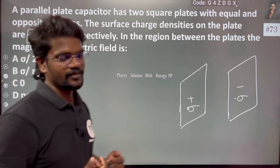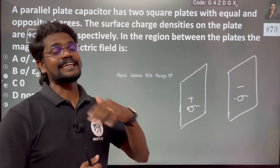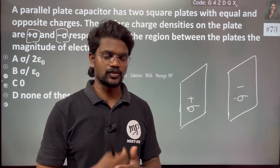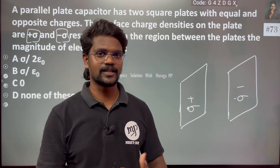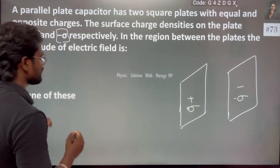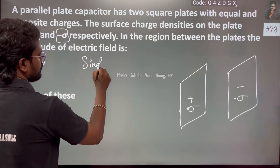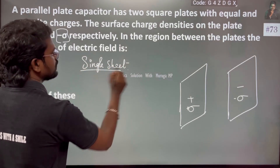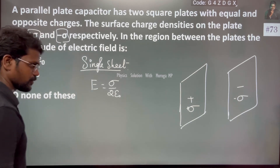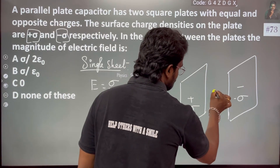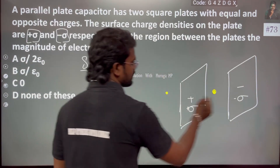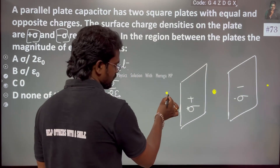In the region between the plates, what is the magnitude of the electric field? We are applying the second application of Gauss's law — the single plane sheet. How will the electric field be? We draw an imaginary closed loop. For a single plane sheet, there are points on both sides of the plate.